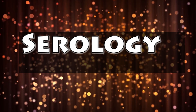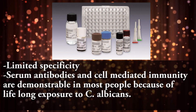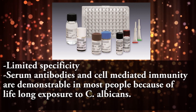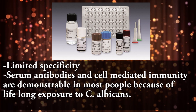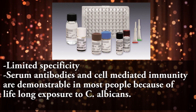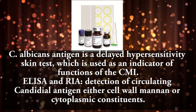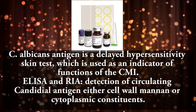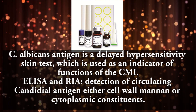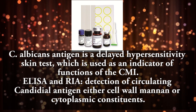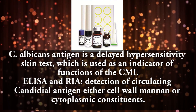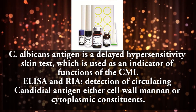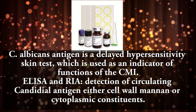Serological tests have limited specificity. Serum antibodies and cell-mediated immunity are demonstrable in most people because of lifelong exposure to Candida albicans. Candida albicans antigen is used in a delayed hypersensitivity skin test, which is used as an indicator of cell-mediated immunity function. ELISA and radioimmunoassay allow detection of circulating Candida antigen, including cell wall, mannan, or cytoplasmic constituents.